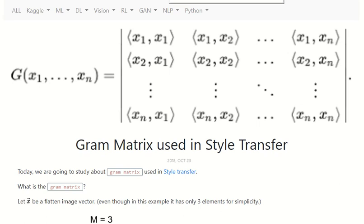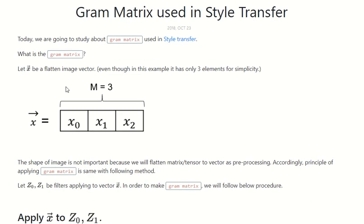Today we will talk about the Gram matrix in linear algebra for style transfer. What is the Gram matrix? Let vector X be a flattened image vector, even though in this example